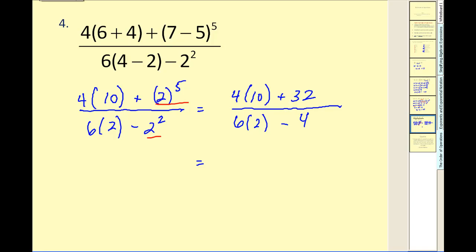Step three of order of operations: multiply and divide as it occurs from left to right. Here we have multiplication and here as well. So we have forty plus thirty-two and twelve minus four. It looks like we have seventy-two divided by eight, which is equal to nine. I hope this overview of the order of operations helps you to simplify expressions properly.